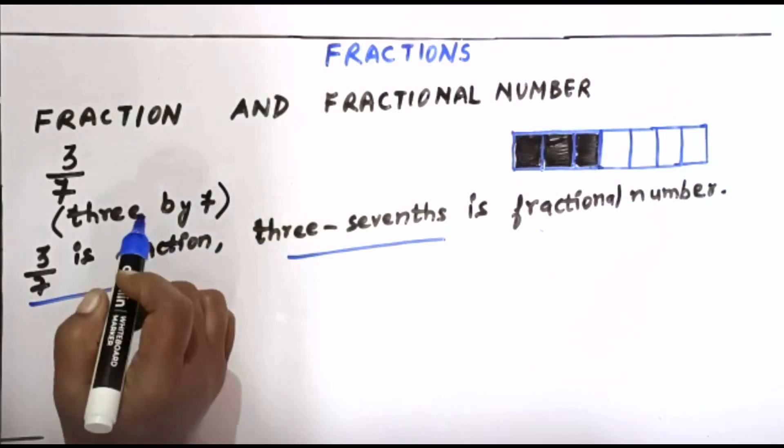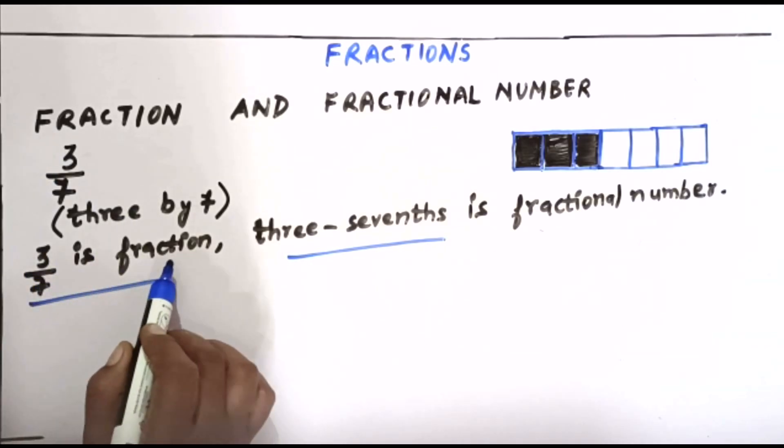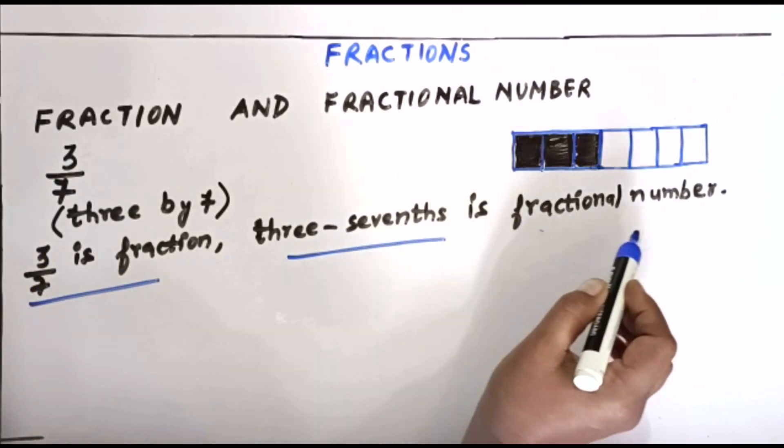Wherein the three by seven is a fraction, and three sevenths is a fractional number. We denote it as three by seven, where three by seven is a fraction, three sevenths is a fractional number.